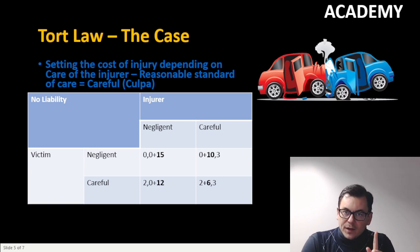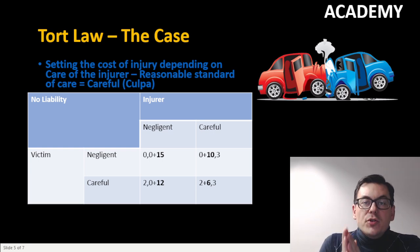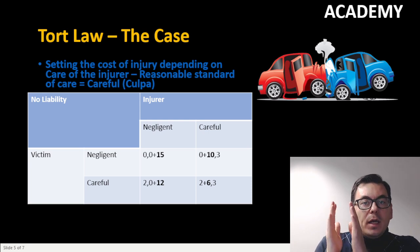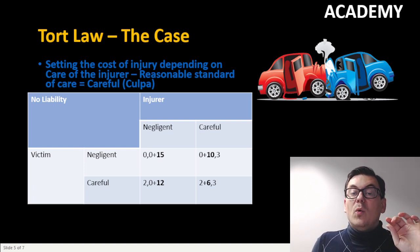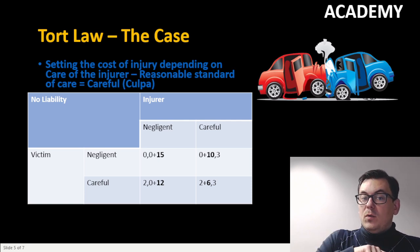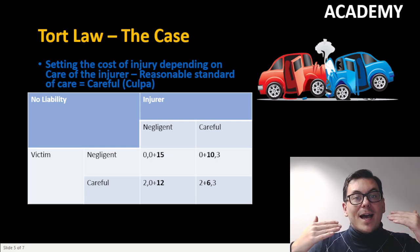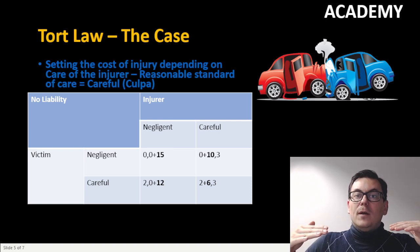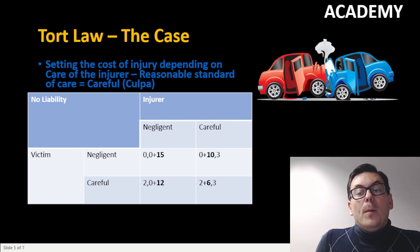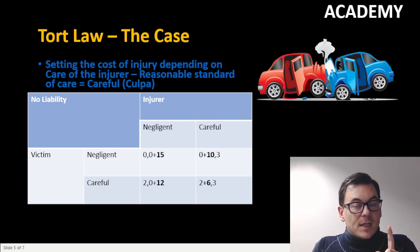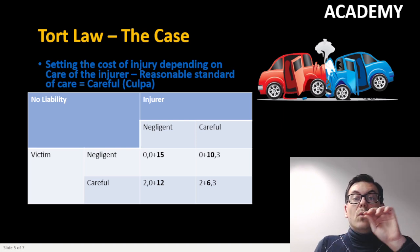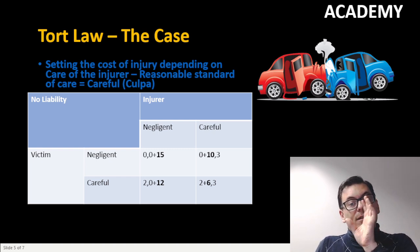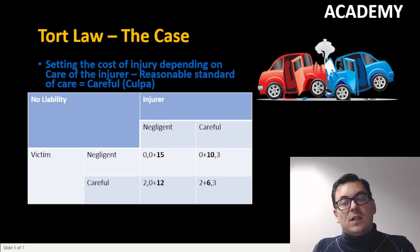We also have an extra cost highlighted in bold — that is the cost of the injury. What is interesting here is that if the injurer meets the reasonable standard of care — and here being careful is considered compliant with that standard — then he or she will not bear the cost of the injury; that cost will go to the victim, because the injurer did have the standard of care expected by society. But if the injurer is negligent and does not comply with the reasonable standard of care, then he or she will bear the cost of the injury.